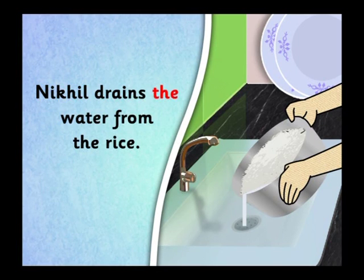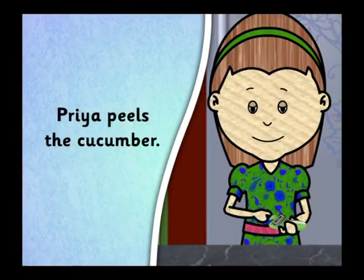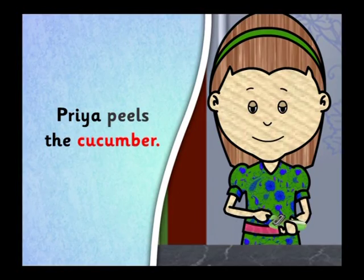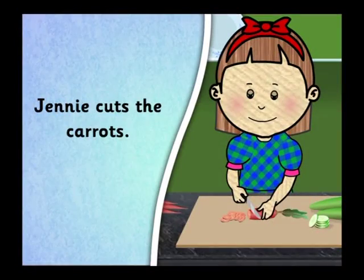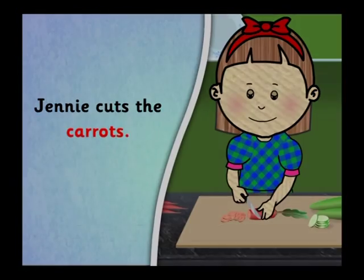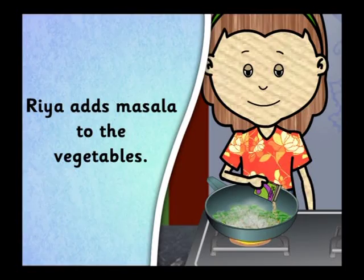Nikhil drains the water from the rice. Priya peels the cucumber. Jenny cuts the carrots. Priya adds masala to the vegetables.